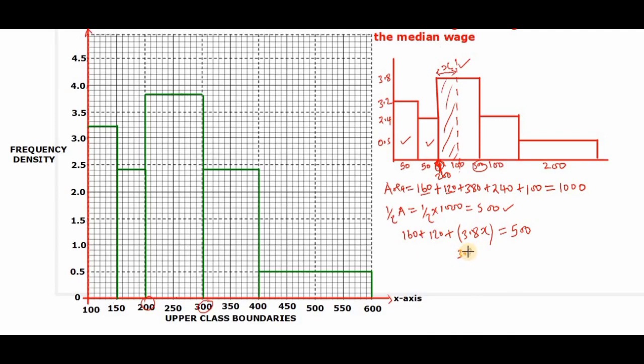So with this, when we do our calculation, we'll have 3.8x is equal to 500. So we have 160 plus 120, which is 280. So crossing the equal sign, we'll have to subtract 280.